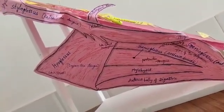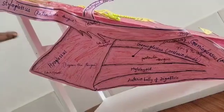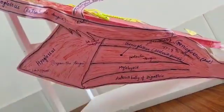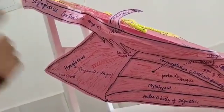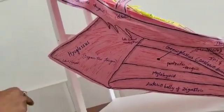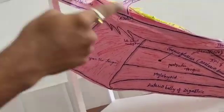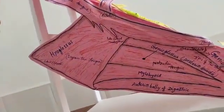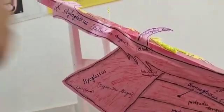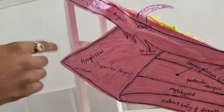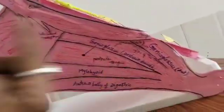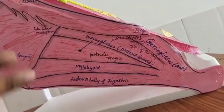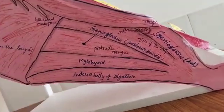The extrinsic muscles are four in number: hyoglossus, styloglossus, palatoglossus, and genioglossus. Styloglossus arises from the styloid process and is inserted into the lateral parts of the tongue. Hyoglossus starts from the hyoid bone and reaches the lateral parts of the tongue. Styloglossus helps us to retract the tongue. Hyoglossus helps us to depress the tongue. Palatoglossus helps with elevation of the tongue. Genioglossus has two branches, posterior and anterior, which help to protrude the tongue.